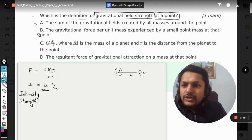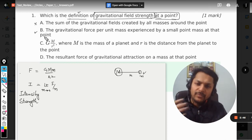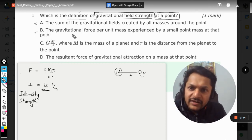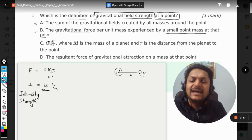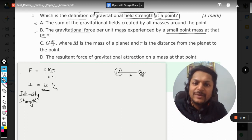It means that this mass have to be diminishing, only then this definition suits the definition of gravitational field intensity. Okay, so now let us go for B option. I know it, that is why I'm telling you. The gravitational force per unit mass, you see, experienced by a small point mass at that point.